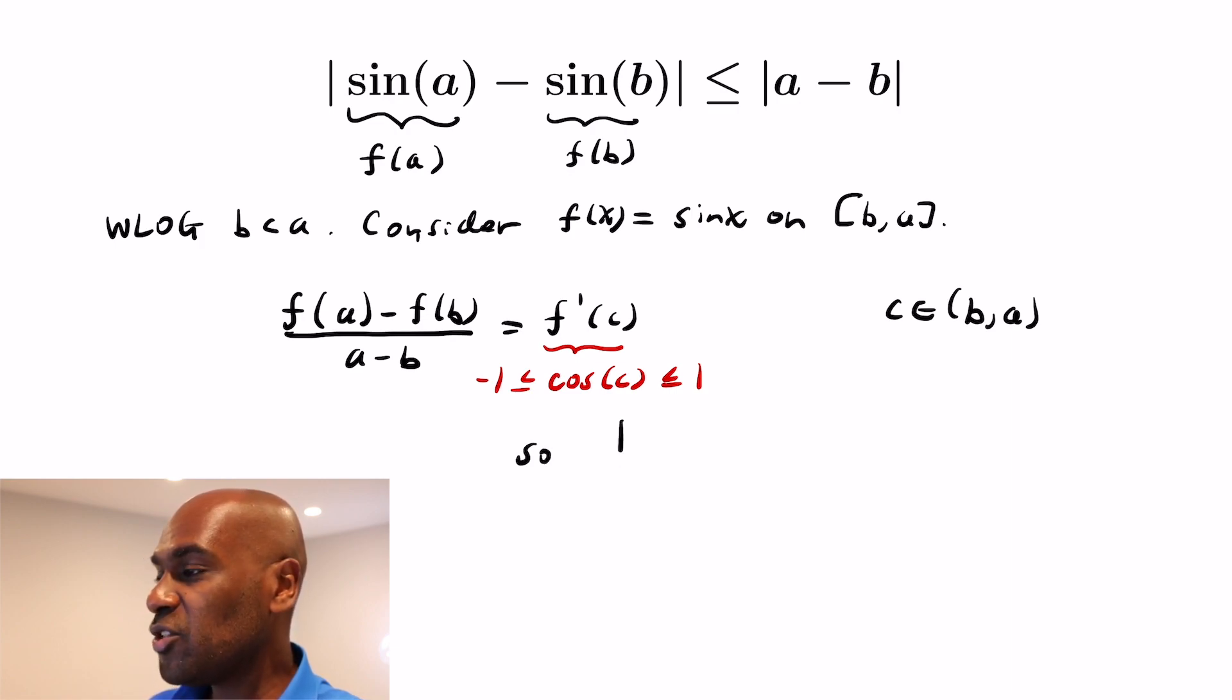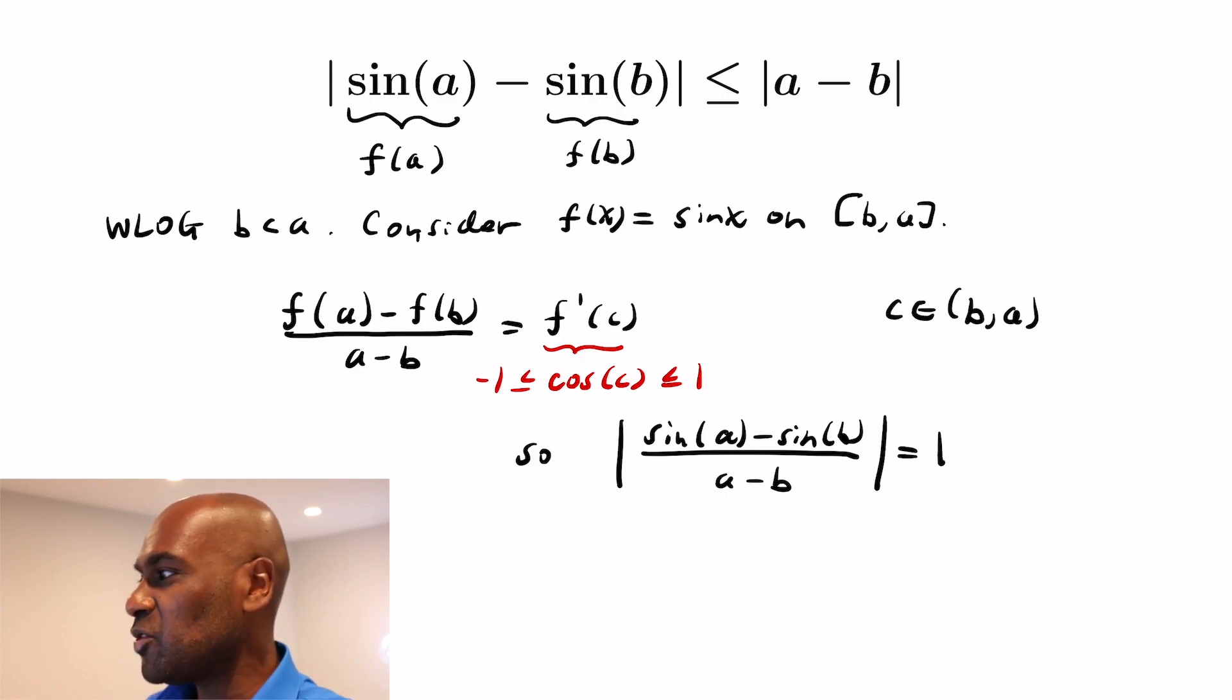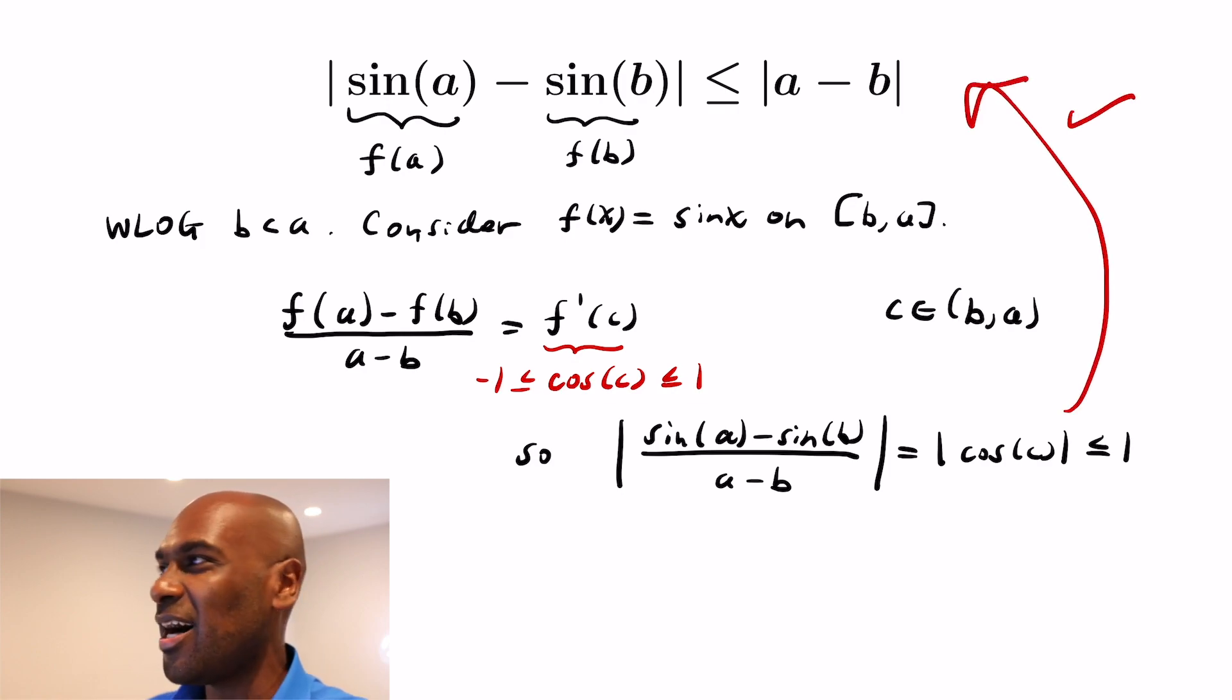So if we actually take absolute values of the left hand side we get |sin(a) - sin(b)|/(a - b) equals the absolute value of cosine of the c value that we picked in the open interval between b and a and that's less than or equal to 1. So if we multiply by the denominator we get exactly the inequality we wanted at the top. So this is a prototypical example of using the mean value theorem to establish inequality upper bounds for a given function.